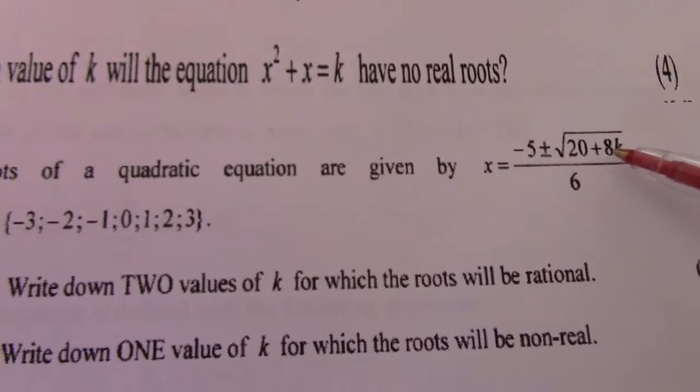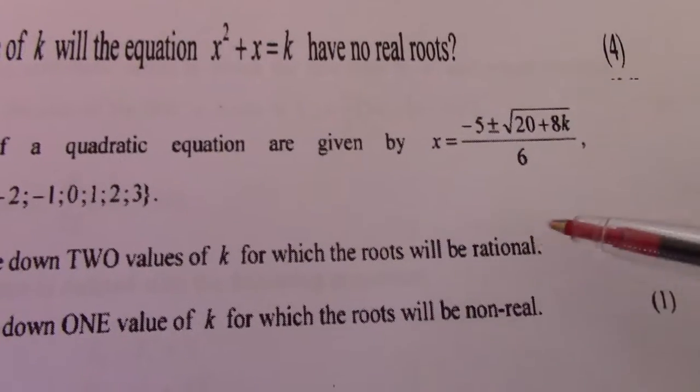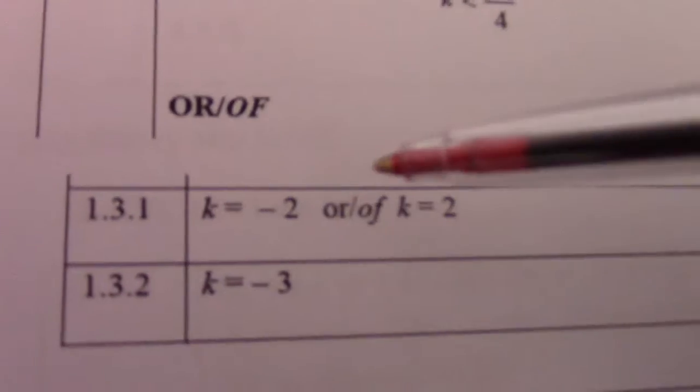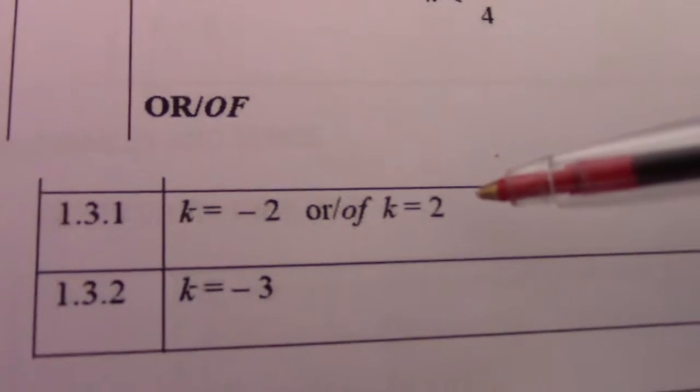And 2 there, if you see there, 36 also gives me a perfect square for them to be rational. So there my answer: k equal negative 2 or k equal to 2.